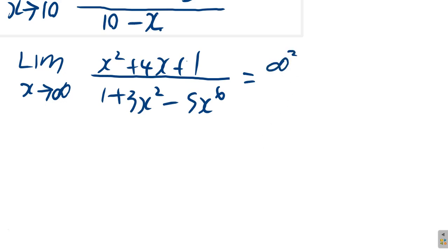An infinitely large number squared is still an infinitely large number. So, plus 4 times infinity plus 1 over 1 plus 3 times infinity minus 5 times infinity to the 6, which is infinity.